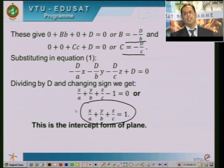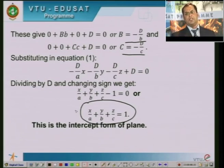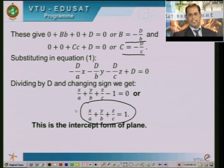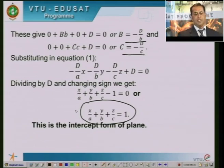In this equation, remember that a, b, c are the X, Y, and Z intercepts — that is, the distances from the origin to where the plane meets each axis.